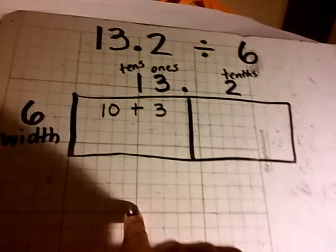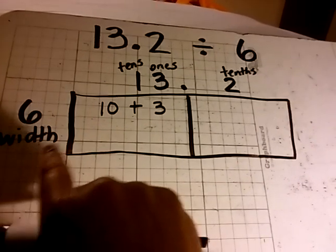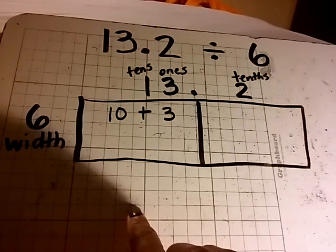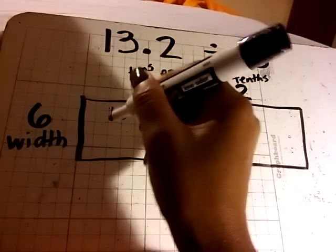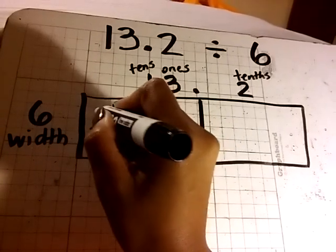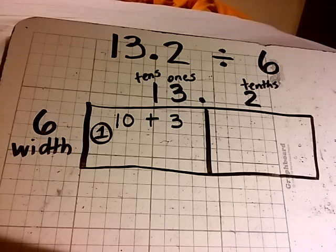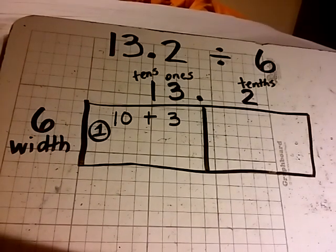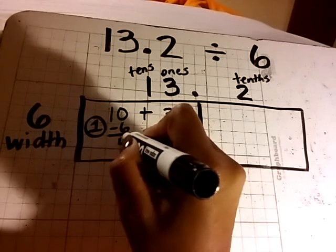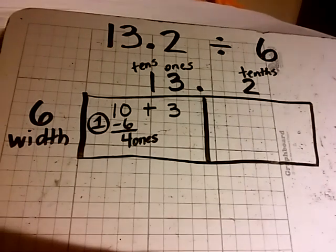Now we are ready to begin. We can ask ourselves, how many groups of 6 are in 10? And the answer is 1. There is 1 group of 6 in 10. I also track that 1 group of 6, and I have 4 ones remaining.